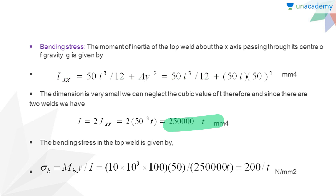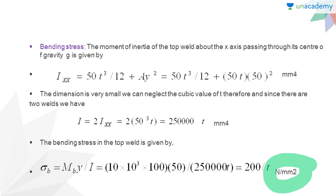We have found the second moment of area of the weld pattern. With this value, we can find the secondary shear stress. The bending stress is sigma_B = M × y / I = (10 × 10³ × 100 × 50) / (250,000T) = 200/T newton per millimeter square. This is the bending stress in the top weld.